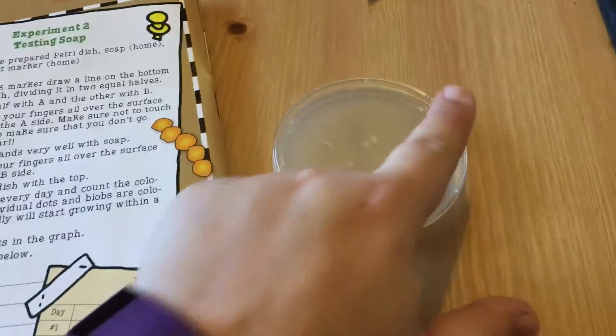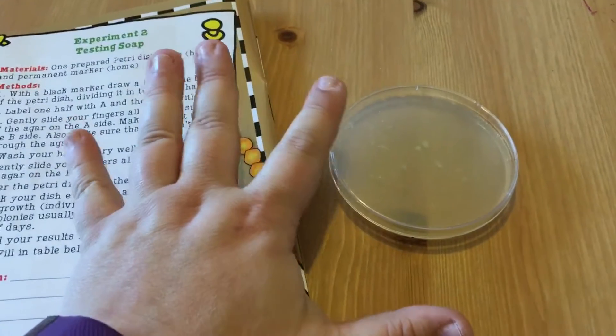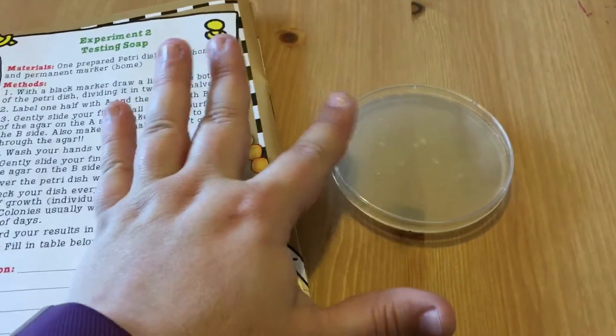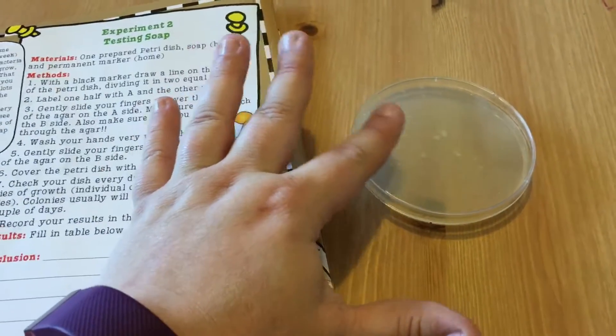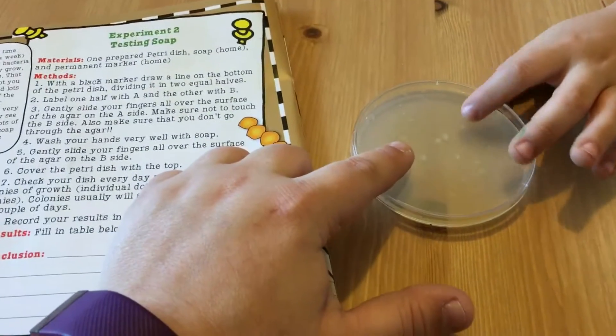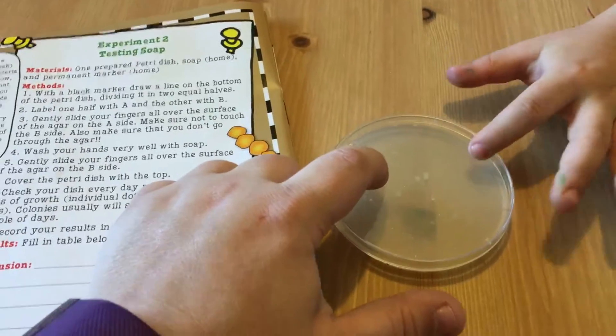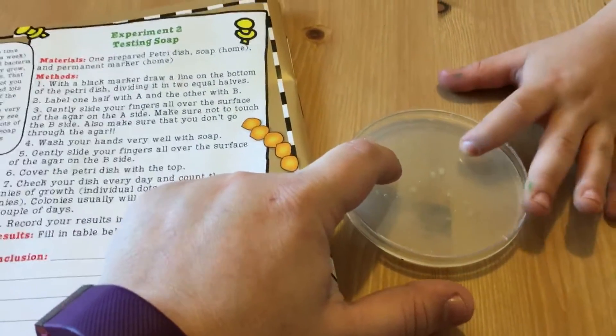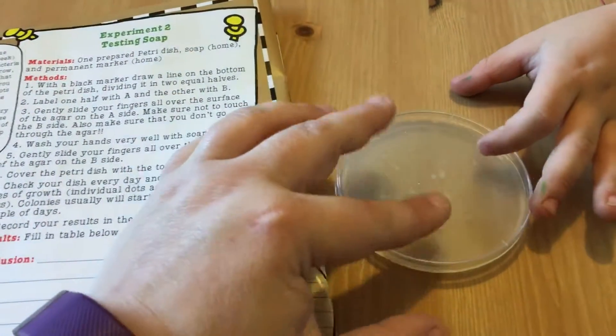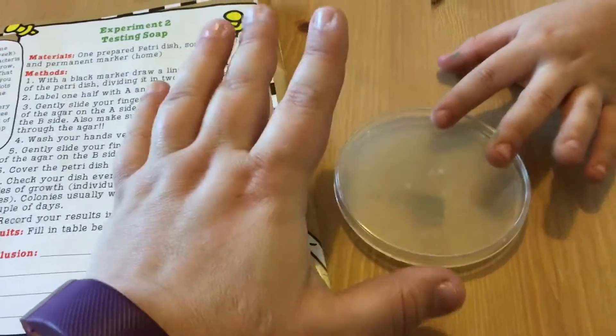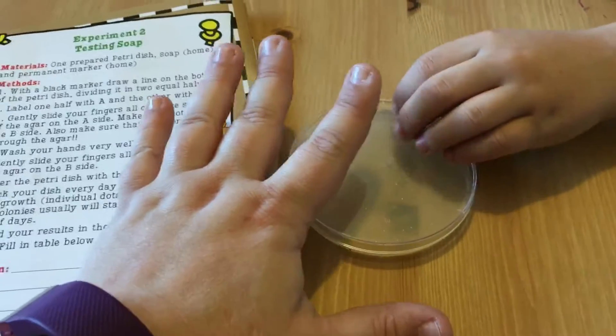On side A we're going to take our hands the way they are and just gently rub our fingers over the top of the agar. Now remember the agar is kind of like jello. You do not want to push down because you're going to ruin the experiment. So you gently glide your finger over the A part. Then we're all going to wash our hands with soap and rub our clean hands over the B side.